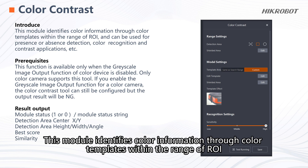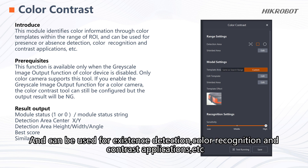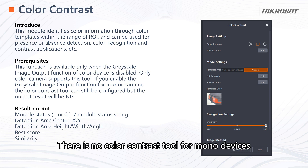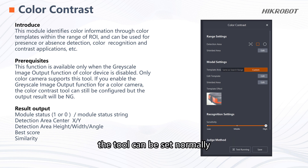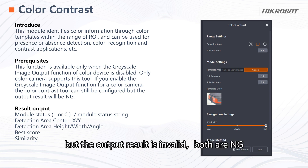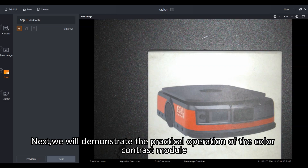The module can be used for existence detection, color recognition, and contrast applications. There is no color contrast tool for mono devices. If it is a color device set to output grayscale image mode, the tool can be set normally but the output result is invalid — both are NG.